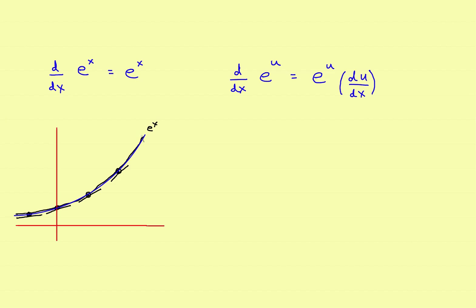So this will be the graph of e to the x. Again, it's the only function whose derivative is the same thing as the original function. And when you look at the graph, you can see why. This is what it would be if it's just a simple x, so the derivative of e to the x is e to the x.